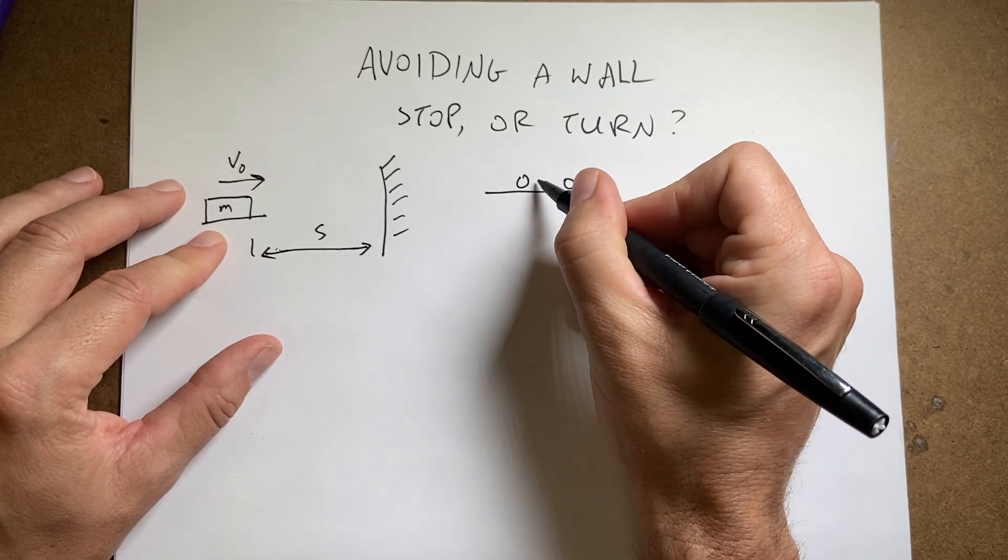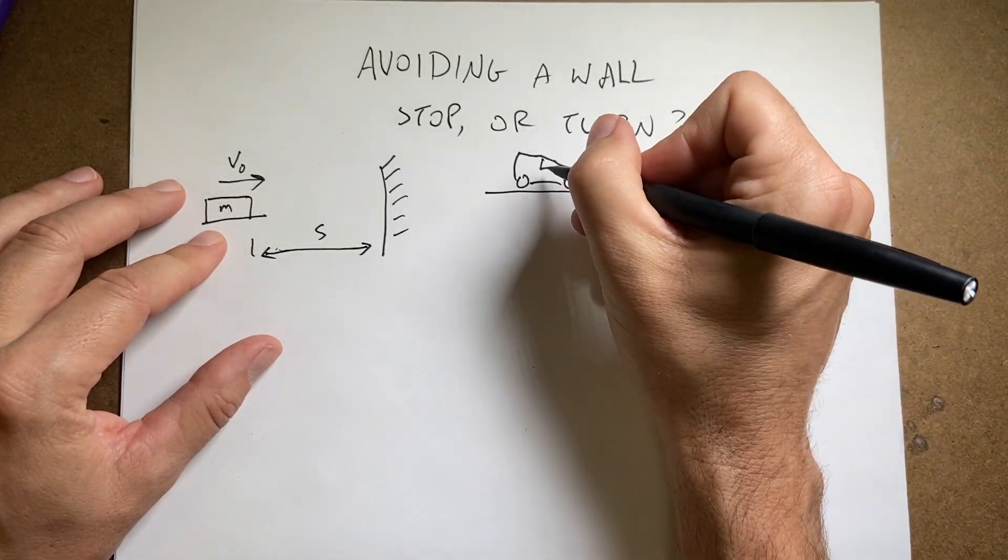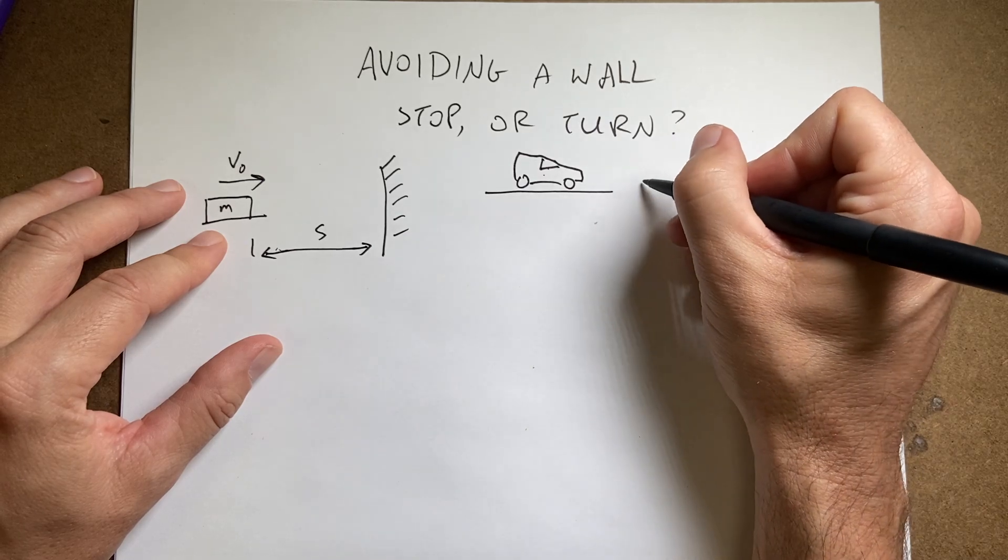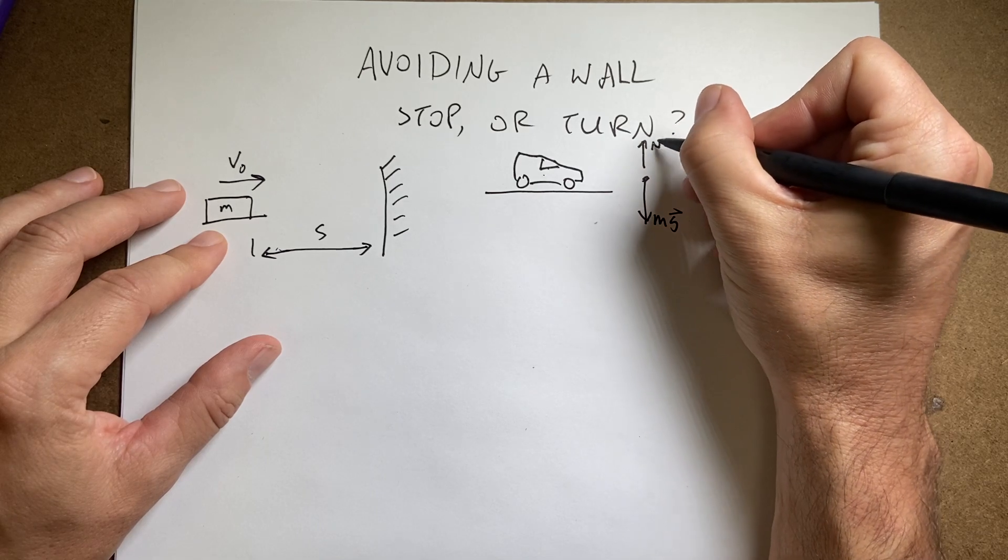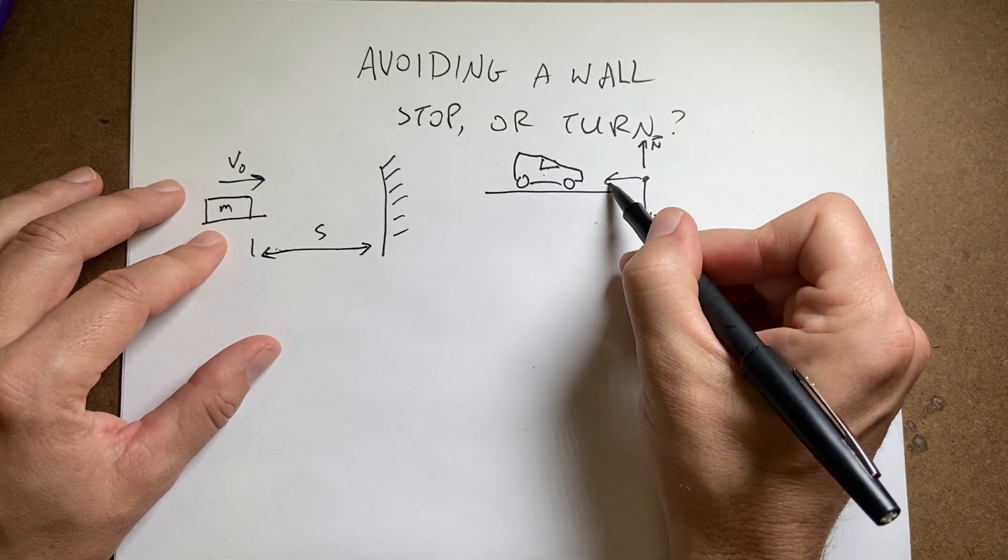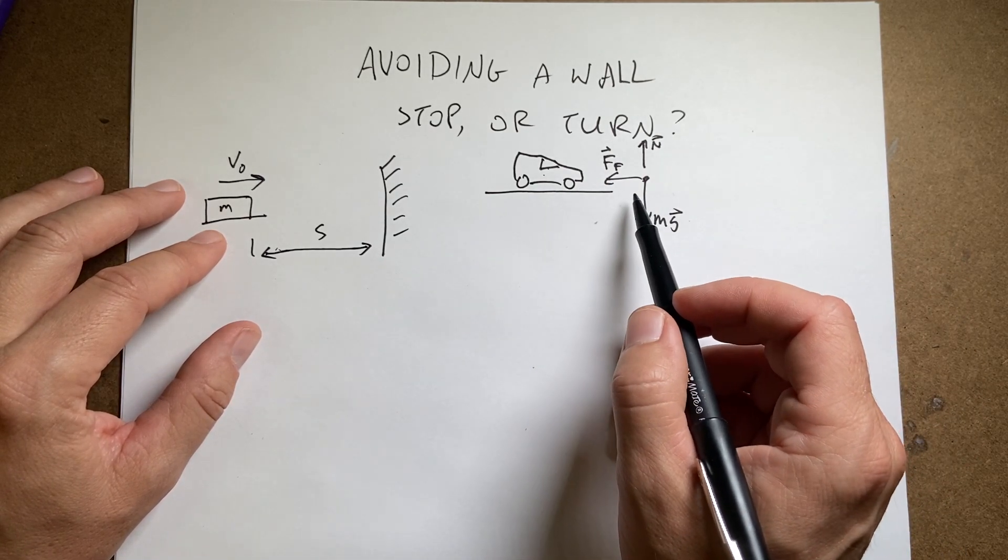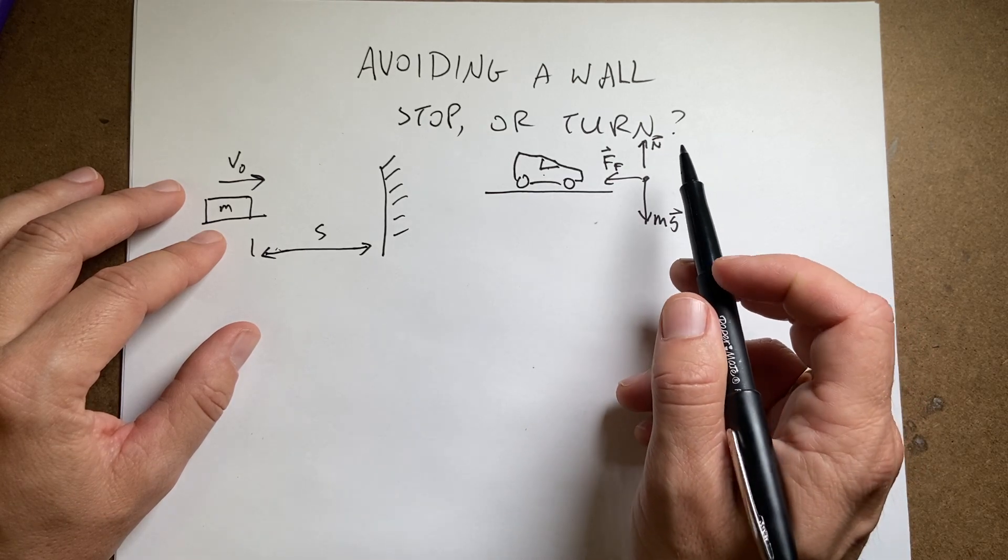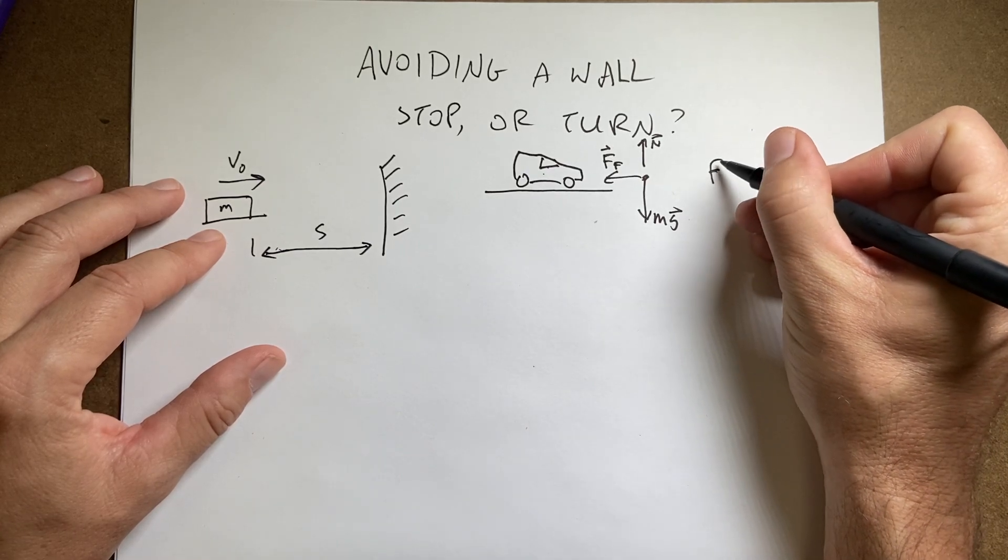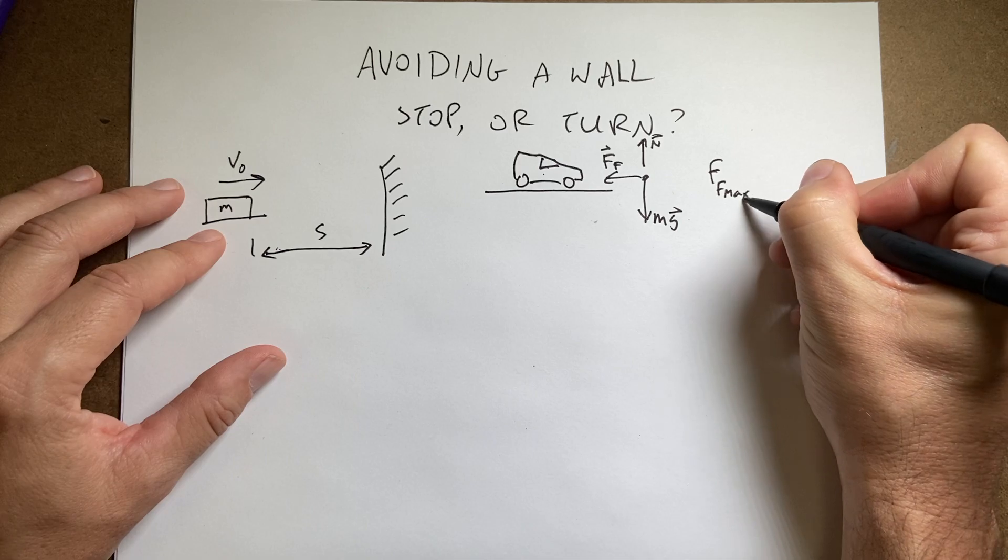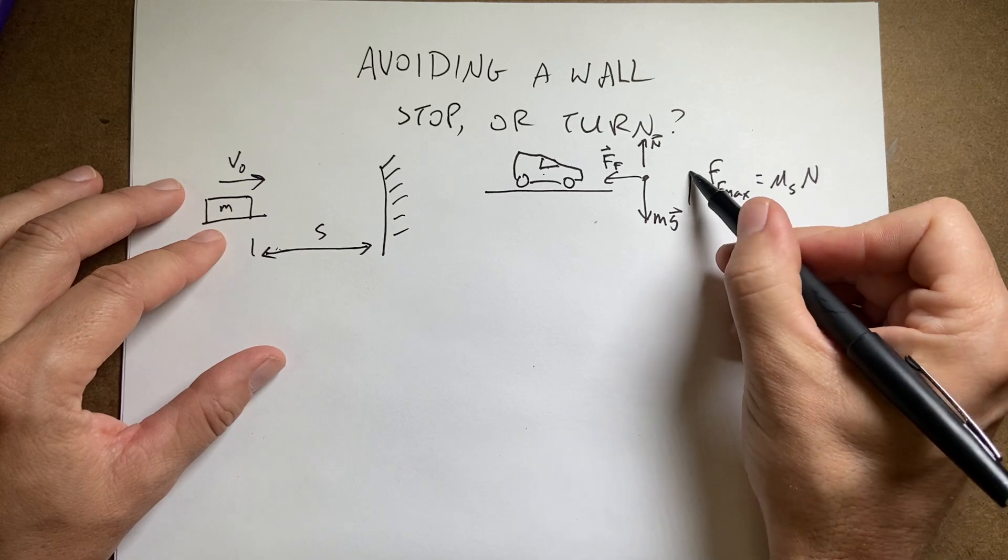So here's my car. And so we have the forces acting on it while it's stopping. We have the gravitational force, we have the upward pushing normal force, and then we have the backwards pushing frictional force. This frictional force, the static friction between the tire and the cars, that's what's going to stop the car. So at the maximum static friction force, F, I'll call it F, the magnitude, F max. I'll be clear to say it's max.